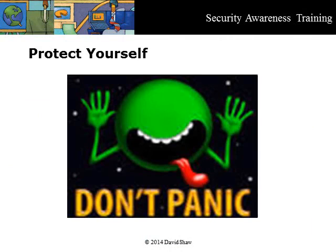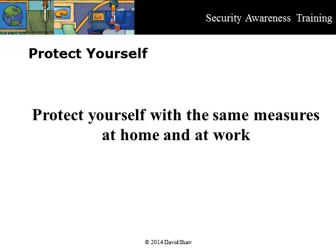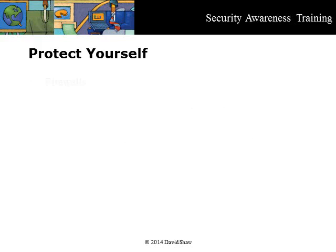There is always going to be some kind of attack vector available for exploit. Don't panic or give up — these are real threats to your life. Identity theft, for example, could ruin your life, so you should take precautions. To protect yourself, you should have some awareness of safe computing. Protect against attacks by organized crime, espionage, and mass surveillance with the same set of measures, both at work and at home.